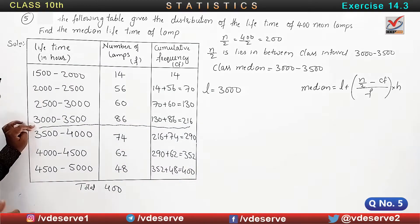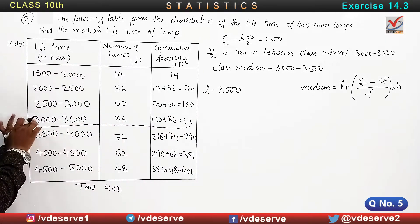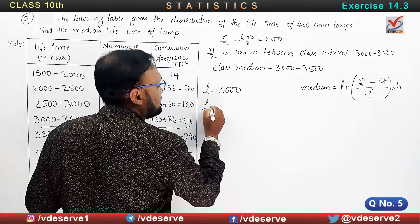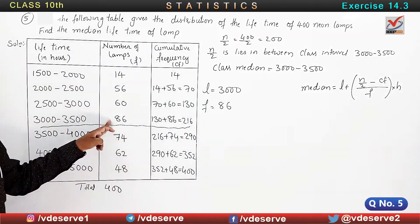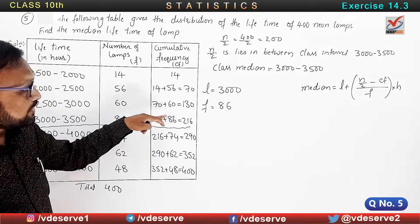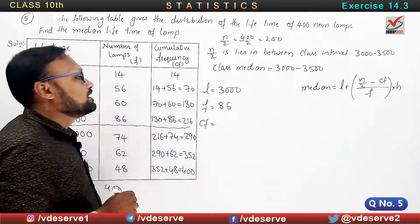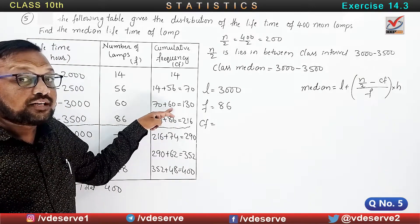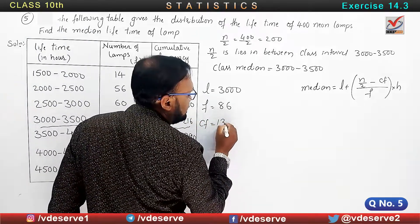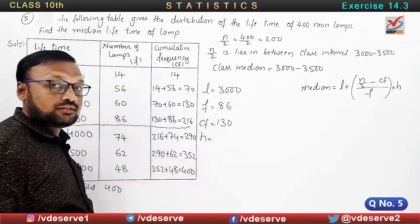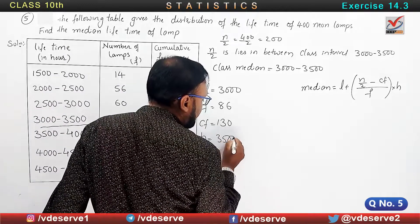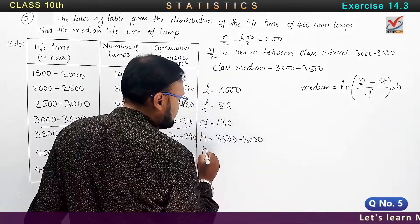H is the difference between the upper limit and the lower limit. So 3500 minus 3000, that is h is equal to 500. These are the values according to the formula.